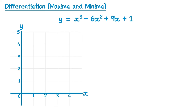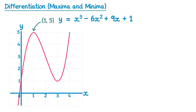This is a sketch of the curve y equals x cubed minus 6x squared plus 9x plus 1, and you can see the two stationary points: coordinates (1, 5) and (3, 1). We say (1, 5) is a local maximum point because it reaches a maximum and then comes back down. We say (3, 1) is a local minimum point because it reaches a minimum and then goes back up. What we need to do is identify if these points are maxima or minima without drawing the graph.